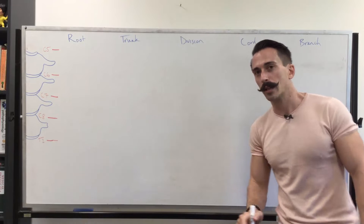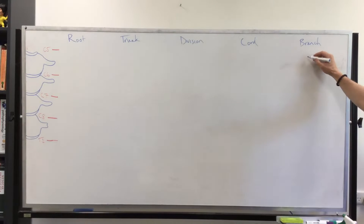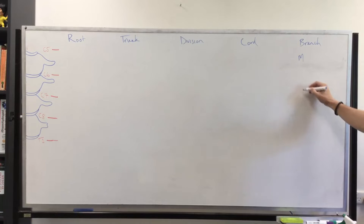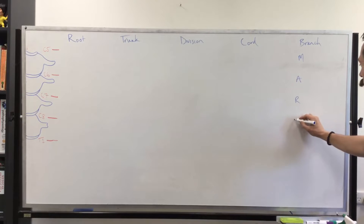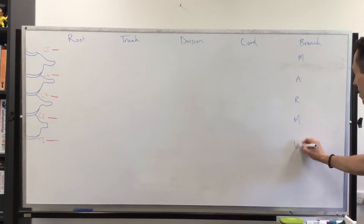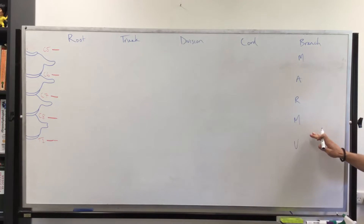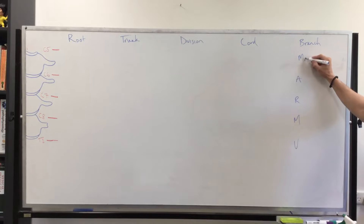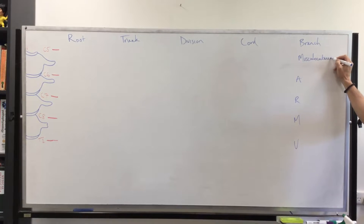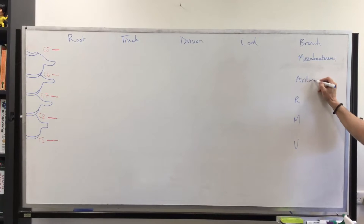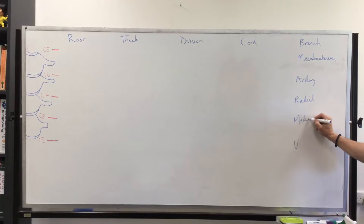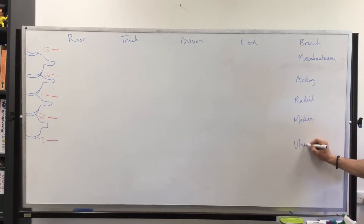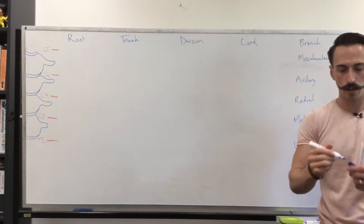The second mnemonic is 'Mum always red me Ulysses': M for musculocutaneous, A for axillary nerve, R for radial nerve, M for median nerve, U for ulnar nerve. That's what we ultimately want to get to from these five nerve roots.